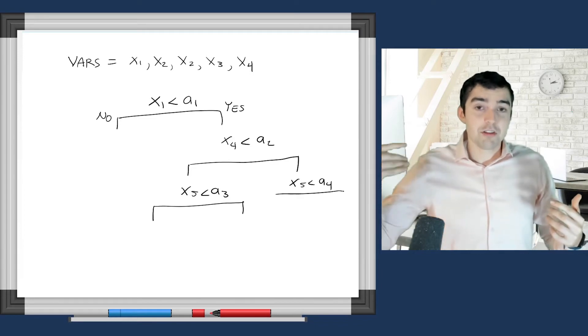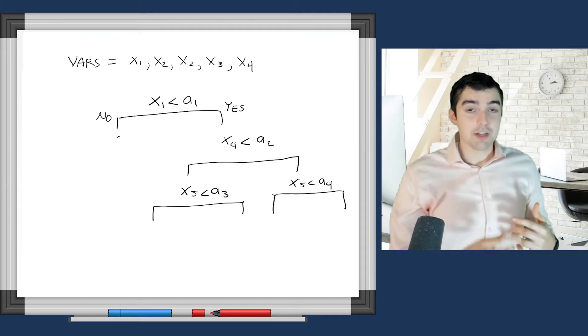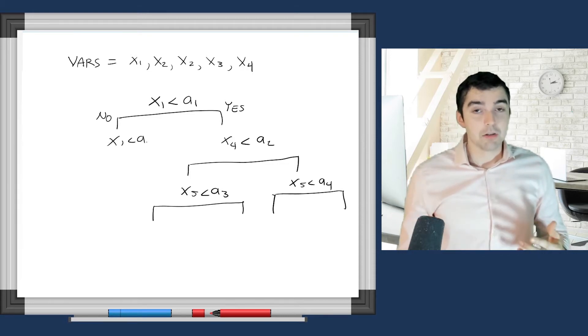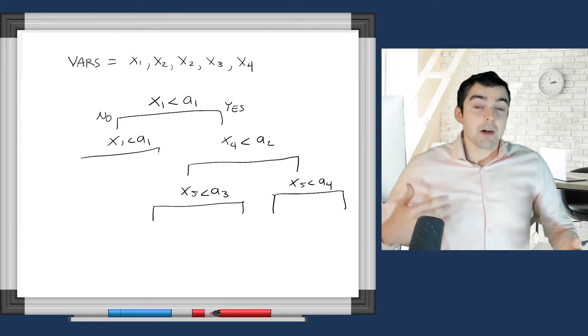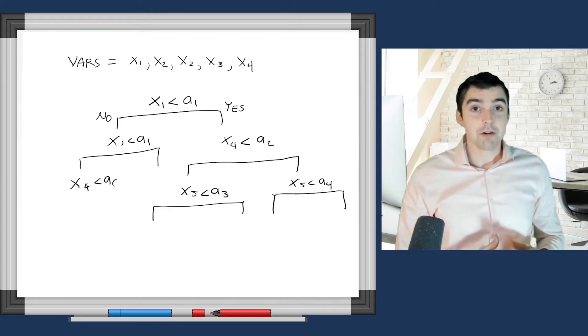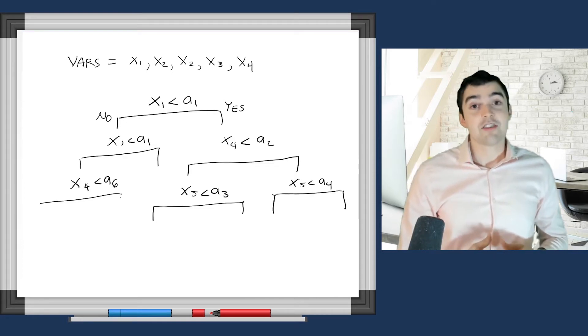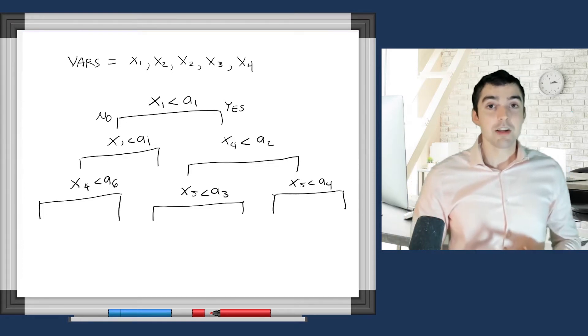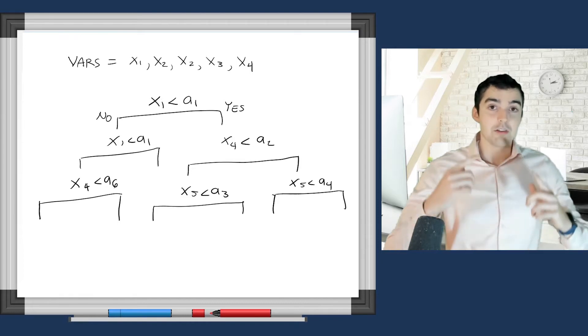The decision tree first works by selecting a variable and a split point. Like it might look at, let's say you're predicting health costs. It would ask, is age greater than 30 and is gender equal to male? If that's the case, it will then create a split.